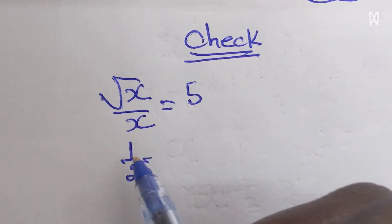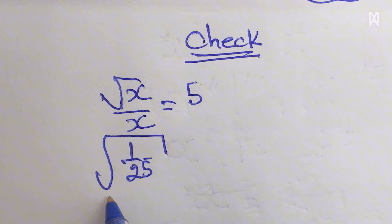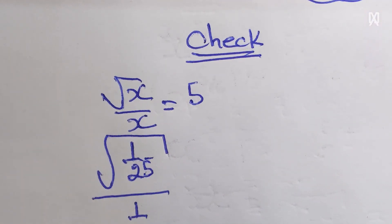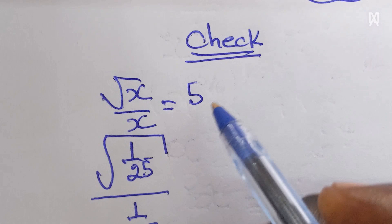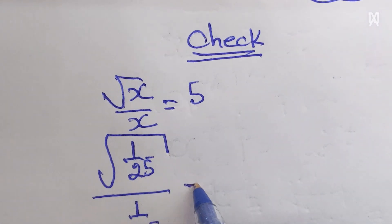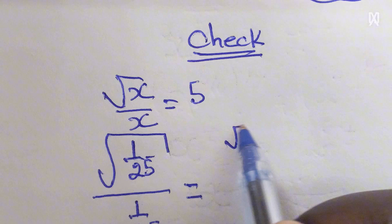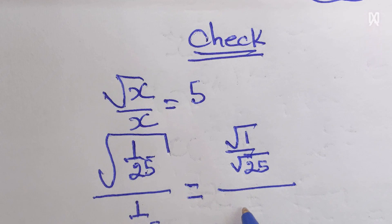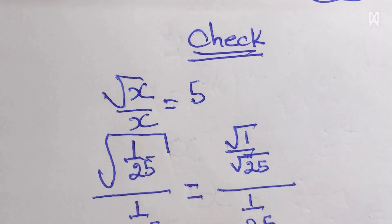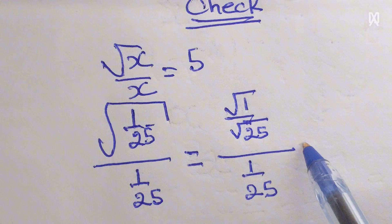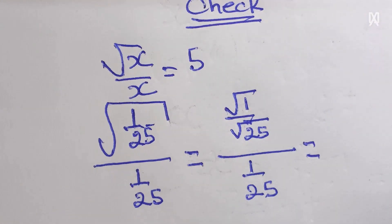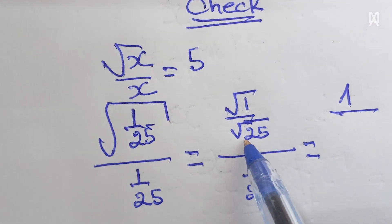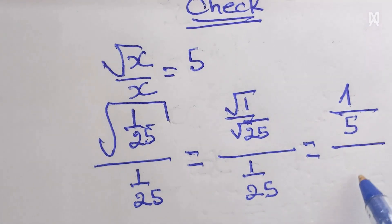Then square root of 1 over 25 over 1 over 25 is equal to 5. You can write this one equal to square root of 1 over square root of 25 over 1 over 25. This equal to square root of 1 is equal to 1, over square root of 25 is equal to 5, then over 1 over 25.